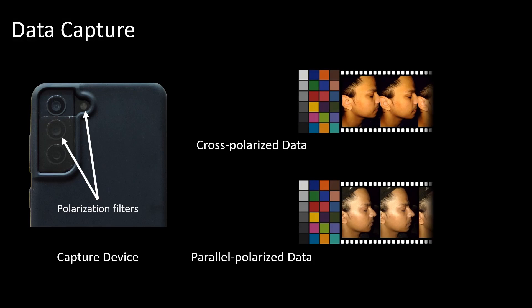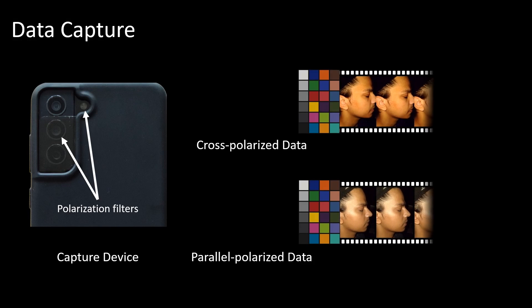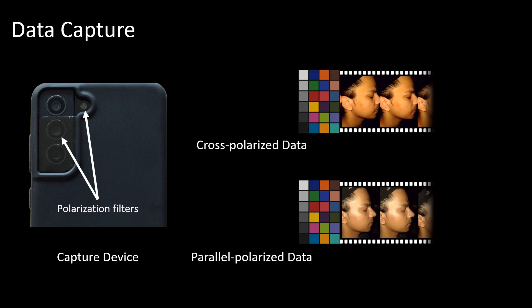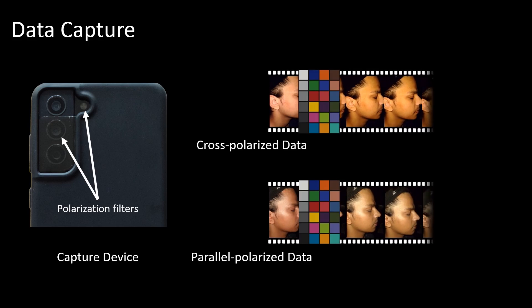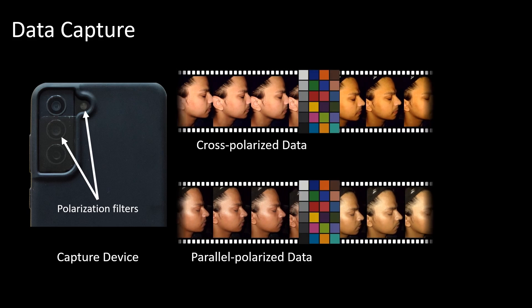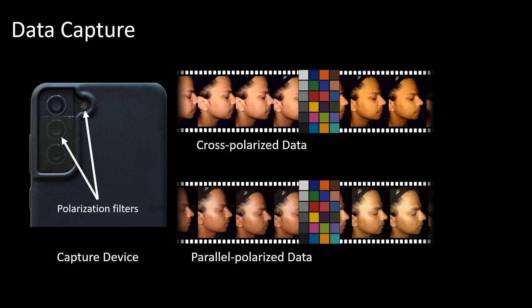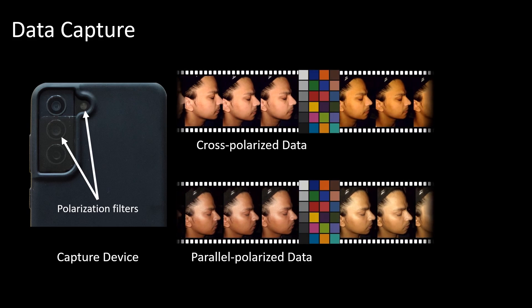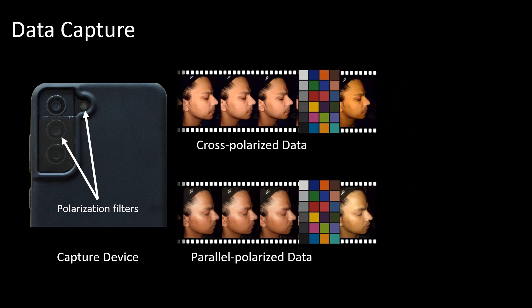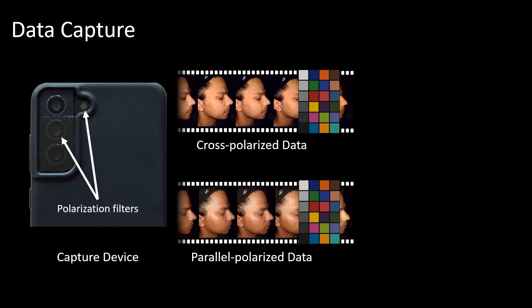Using a smartphone equipped with polarization foils, we capture cross-polarized and parallel-polarized images of a subject. In a pre-processing step, we color calibrate the smartphone camera with a Macbeth chart.